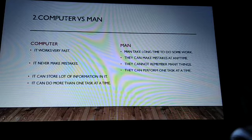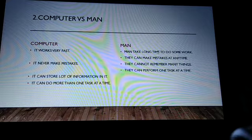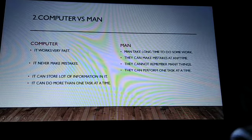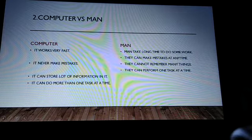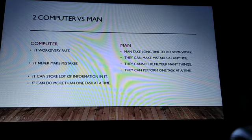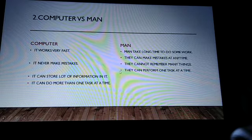Our second topic is computer versus man — what a computer will do and what man can do. A computer works very fast, but man takes a long time to do some work. A computer never makes mistakes, but man can make mistakes. A computer can store a lot of information, but man can remember only little things. A computer can do more than one task at a time, but man cannot perform more than one task at a time.